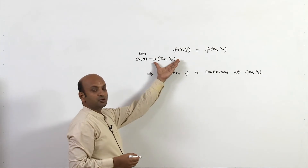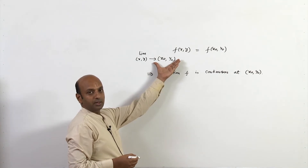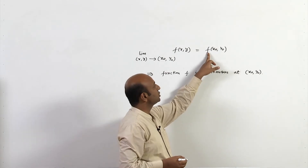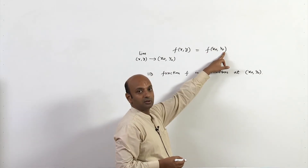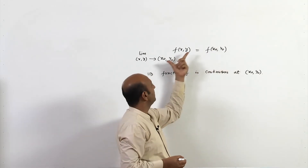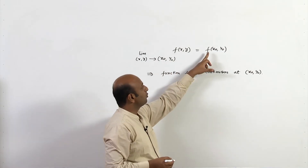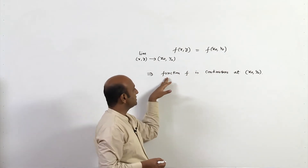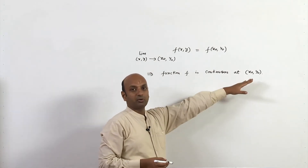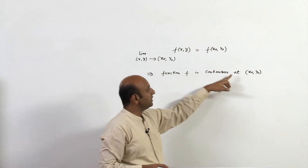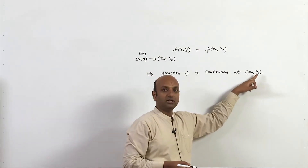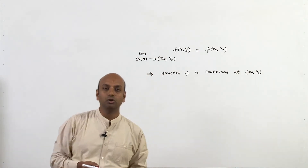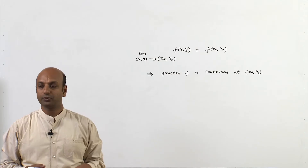So continuity at a point means the limit must exist and be unique, the function must be defined at (x₀,y₀), and the value of the limit must equal f(x₀,y₀). If this holds for every (x₀,y₀) in the domain of f, then we say the function is continuous on its entire domain.